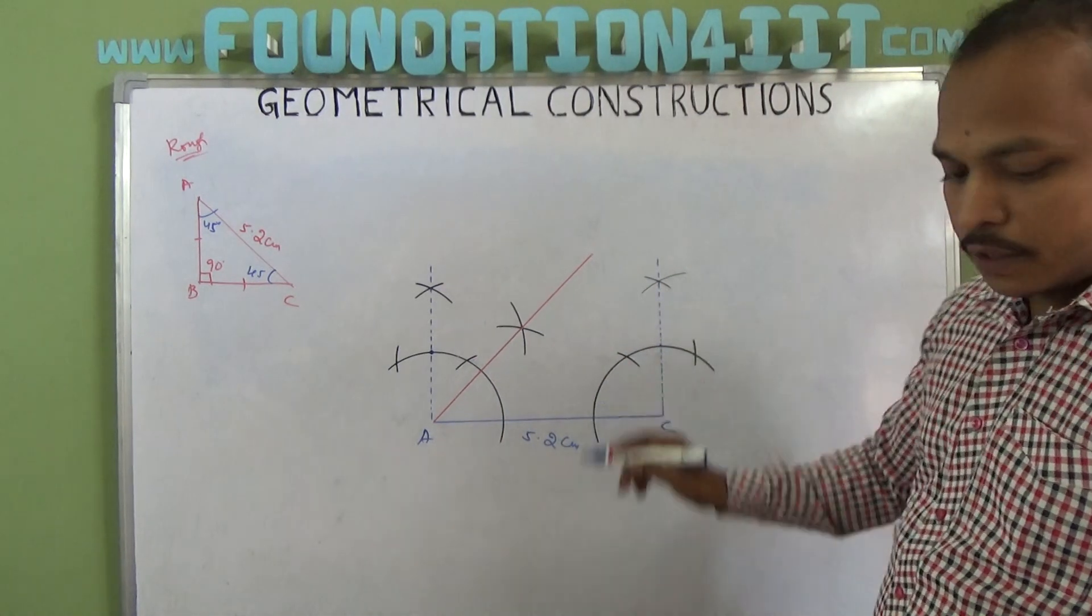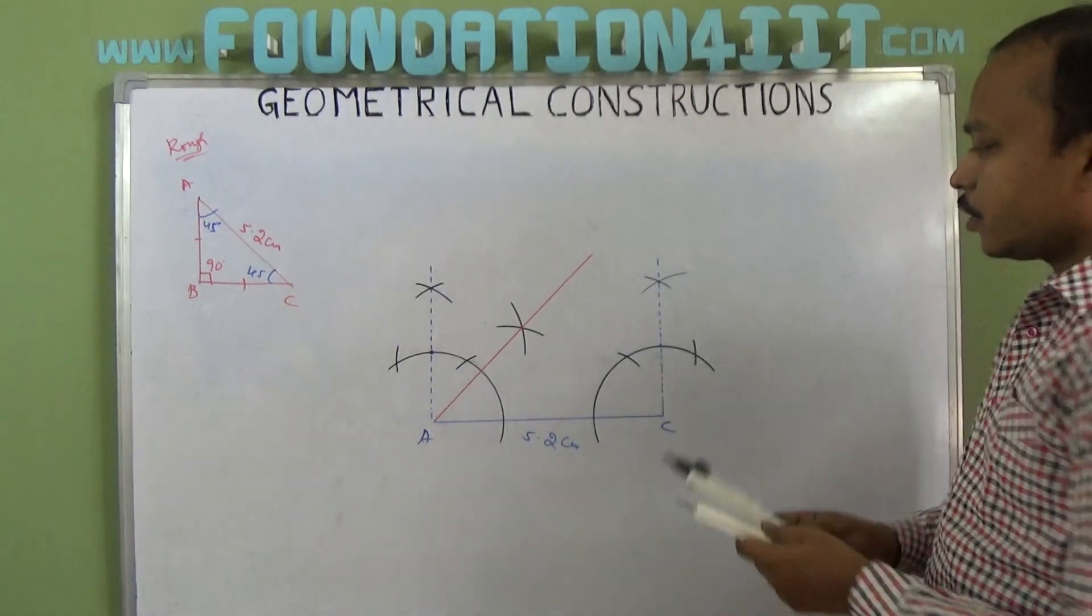So this is 90 and 0. Now you need to bisect it.